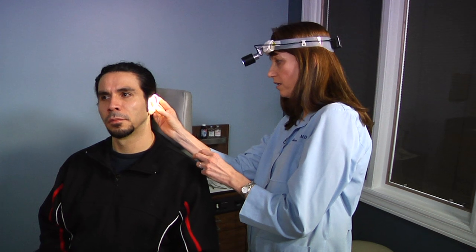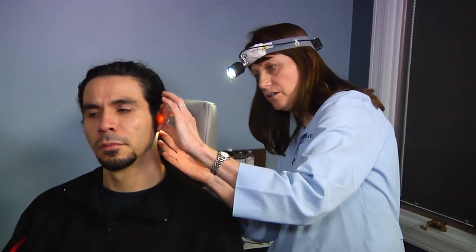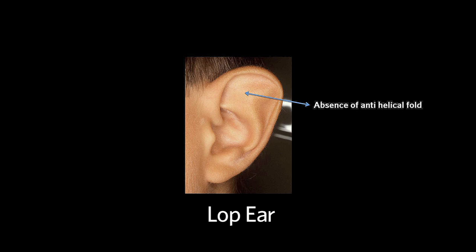We're checking for any lesions like small skin cancers, hematomas, or lop ear. Now we're looking behind the ear, checking the mastoid area. All looks good. Common abnormalities of the pinna or external ear include basal cell and squamous cell carcinoma, lop ear — in which the anti-helical fold is missing and the concha bowl is often enlarged — and auricular hematoma, which if untreated leads to cauliflower ear.